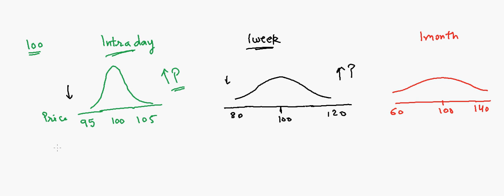Now consider a call option with strike price K = $110. Looking at the intraday distribution, the likelihood of the stock reaching $110 is not much, so the call price might be just $0.50.